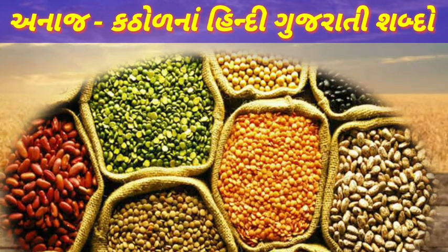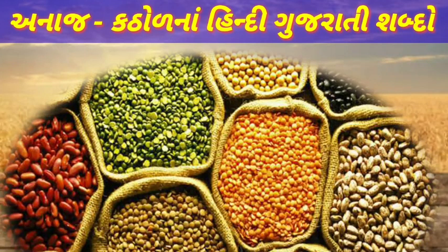અનાજ અને કઠોળના હિંદી-ગુજરાતી નામ. કેટલાક અનાજ છે, એના ગુજરાતી નામ તો આપણને ખબર છે, હવે એના હિંદી નામ પણ આપણે જોઈશું. સાથે સાથે કઠોળના પણ હિંદી-ગુજરાતી નામ આપણે જોઈશું. કઠોળને હિંદીમાં 'દાલ' પણ કહેવાય છે. સૌ પ્રથમ આપણે જોઈશું અનાજના નામ.